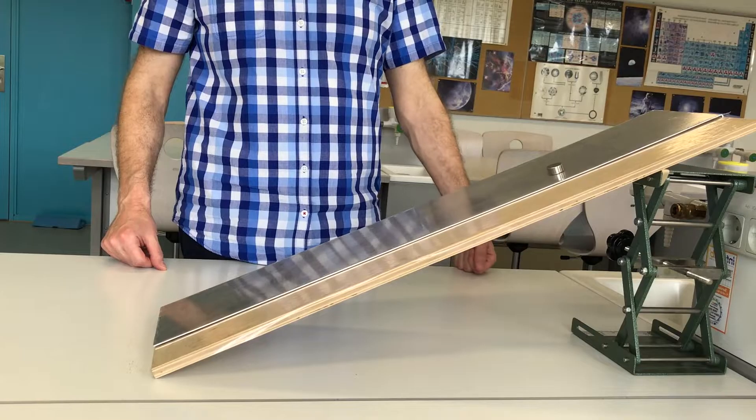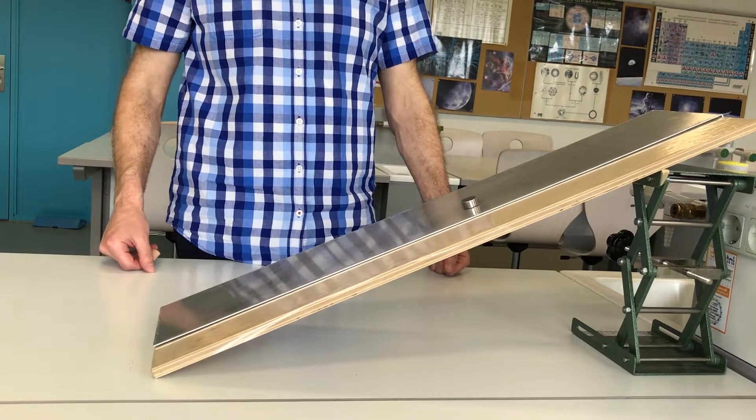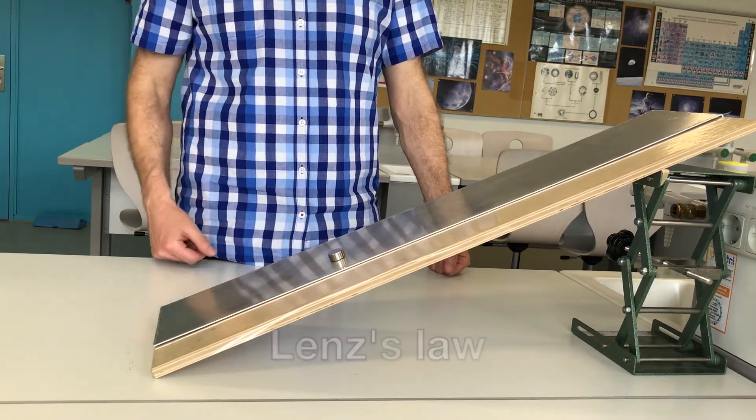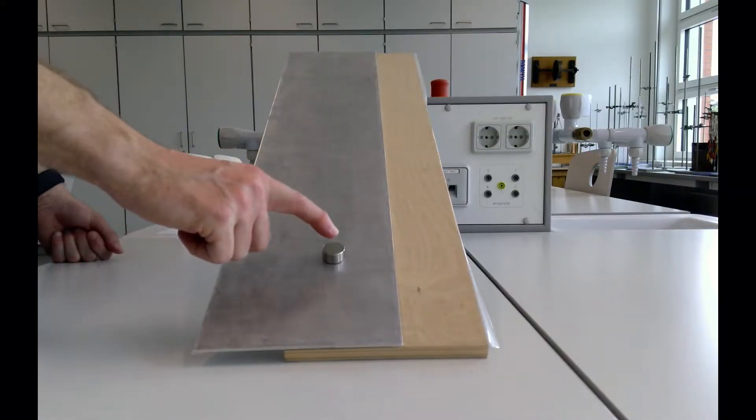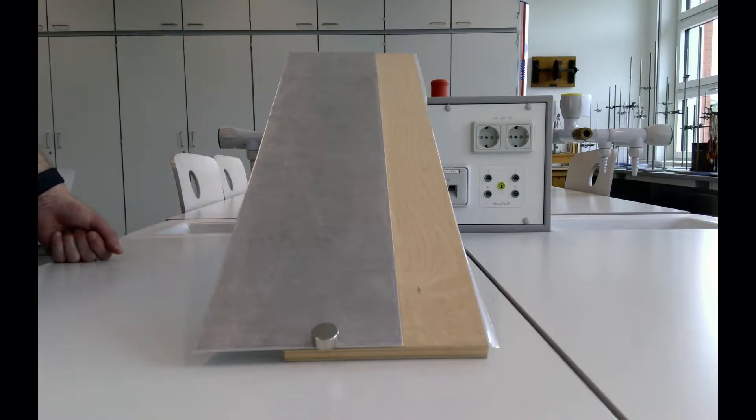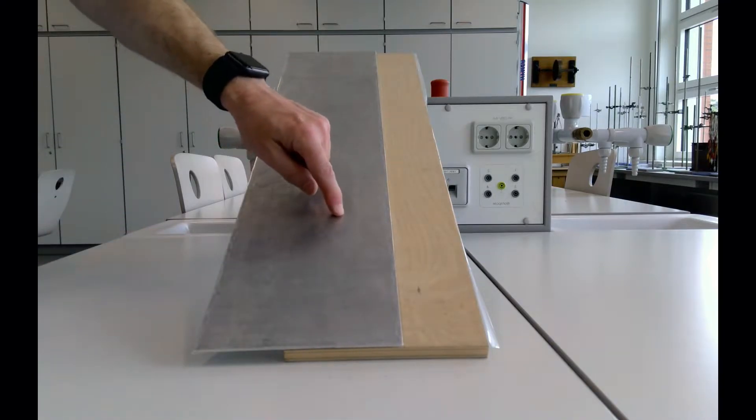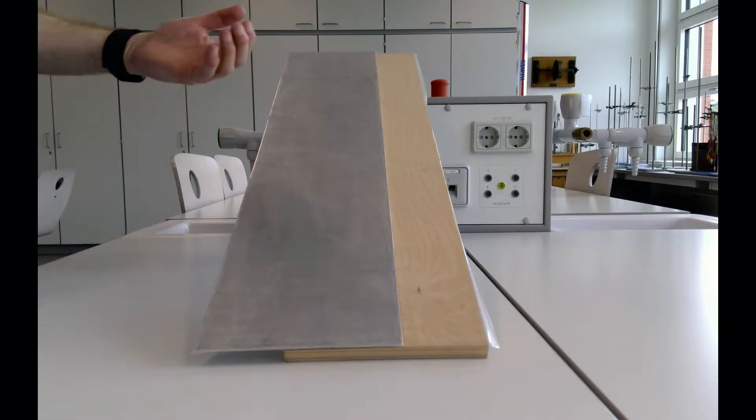This braking effect is a direct consequence of Lenz's law, which states that any action that produces electromagnetic induction—in this case, the pull of gravity—will produce such an induced current into this metal sheet that it will oppose the action.